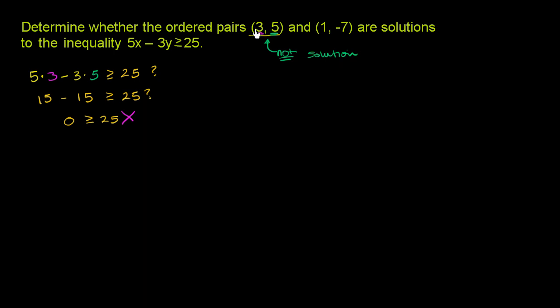Now let's try it with 1 and negative 7. So we have 5 times 1 minus 3 times negative 7 needs to be greater than or equal to 25. 5 times 1 is 5. And then minus 3 times negative 7 is negative 21. So it becomes minus negative 21 needs to be greater than or equal to 25.